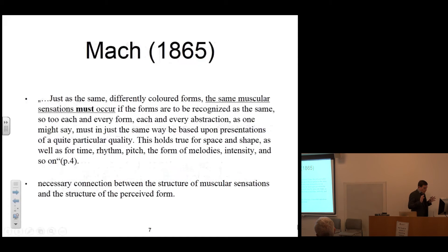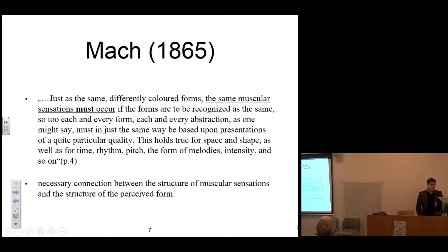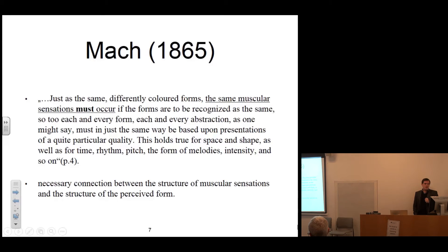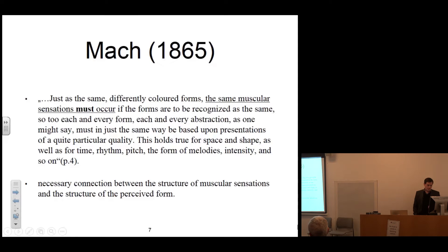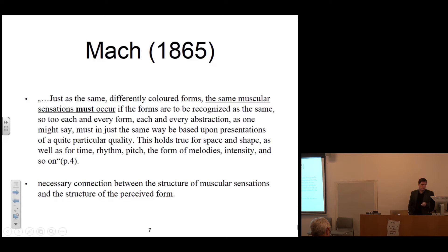The main hypothesis Mach presents in this paper could be summarized in this quote: 'Just as the same differently colored forms — the same muscular sensation must occur if the forms are to be recognized as the same. So to each and every form, each and every abstraction, as one might say, must in just the same way be based upon presentations of a quite particular quality. This holds true for space and shape as well as for time, rhythm, pitch, the form of melodies, intensities, and so on.' The basic idea formulated here is that there is a necessary connection between the structure of muscular sensations and the structure of the perceived form.